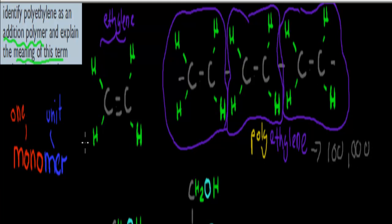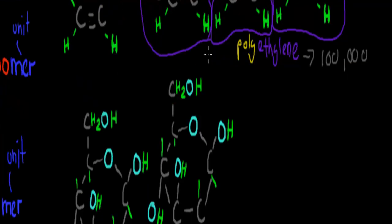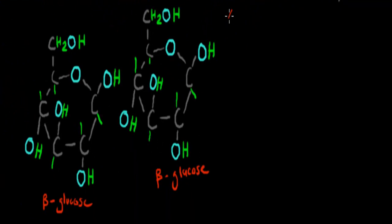Now that we've established what a monomer and a polymer are, and that ethylene can be a monomer to make polyethylene, we're going to go over what the term addition polymer means.